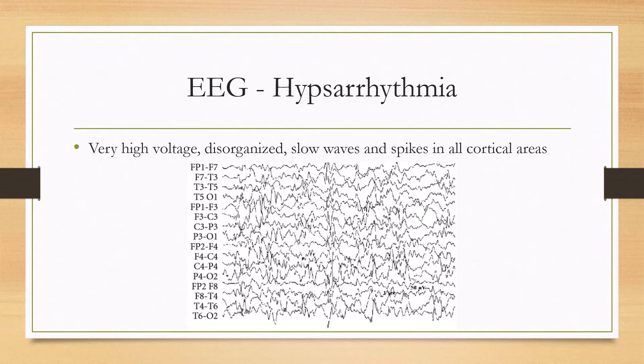The EEG is very characteristic. There's not really an organized background — it's kind of random. There are very high voltage waves, slow waves, and spikes, and that's over the entire EEG.